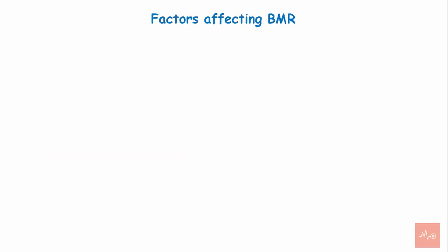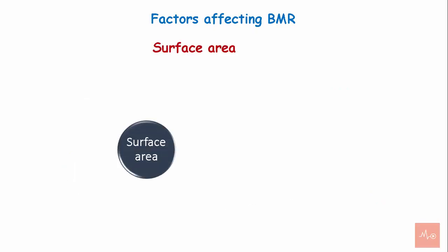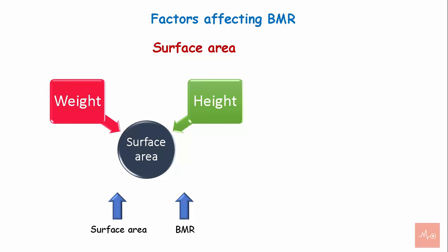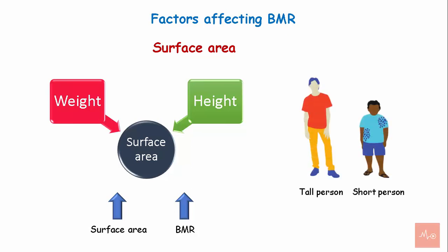Factors affecting BMR — Surface area. Body surface area for an individual depends on the height and weight of the person. Higher the surface area, higher is the BMR. For instance, out of two individuals with the same weight, the taller person will have a higher surface area and higher BMR compared to the shorter individual. Body surface area is directly proportional to the basal metabolic rate.